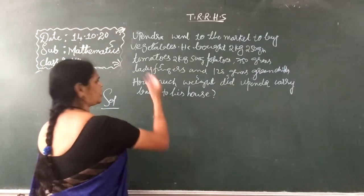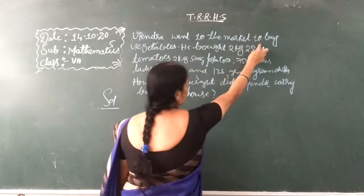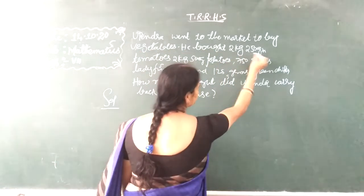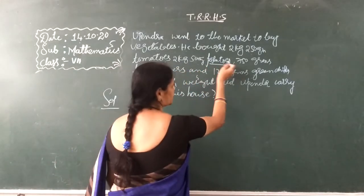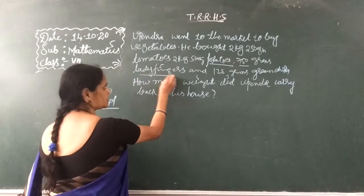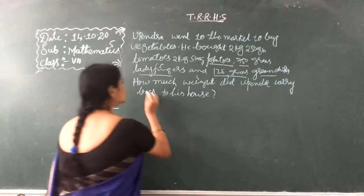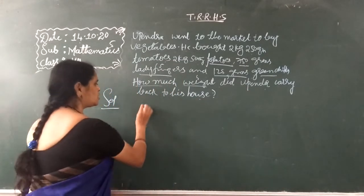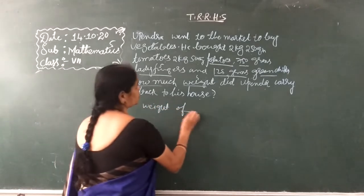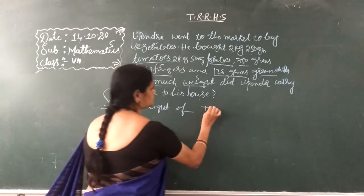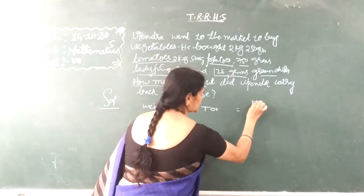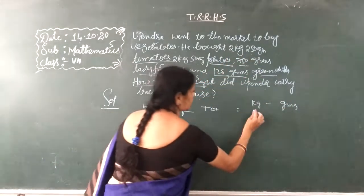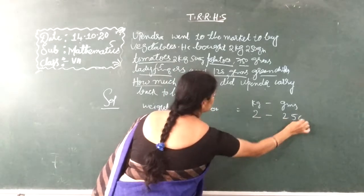Now see this one word problem — a very easy word problem, everyone can do this. So he went to the market to buy vegetables — he bought 2 kg 250 grams of tomatoes, 2 kg 500 grams of potatoes, and 750 grams of lady's finger, and 125 grams of green chilies. Your question is: how much weight did Utaidra carry to his house? So first, weight of tomatoes — 2 kg 250 grams. Next, weight of potatoes — 2 kg 500 grams.